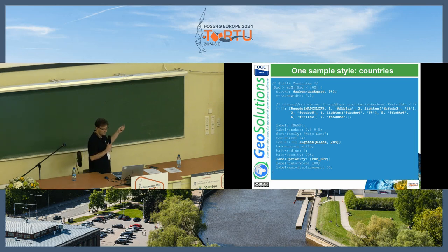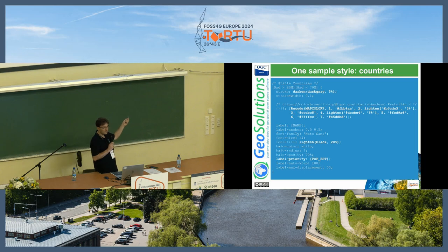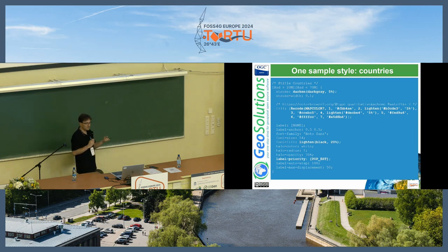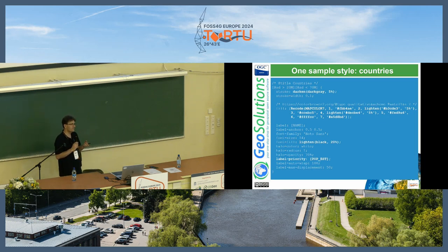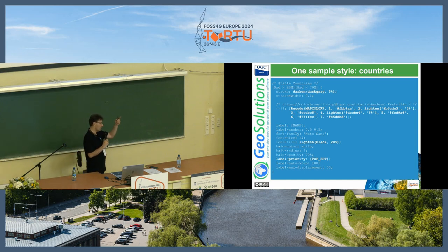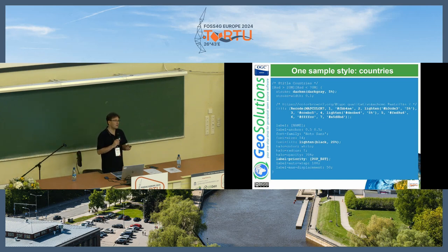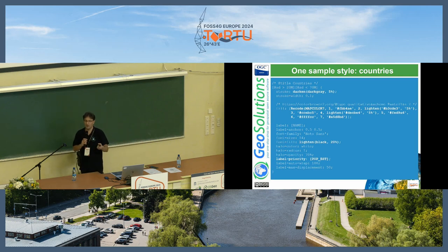The second field is coloring the map using seven colors. The Natural Earth country map has a number in a column that guarantees that if you assign a different color to each value, no two countries will share the same color.